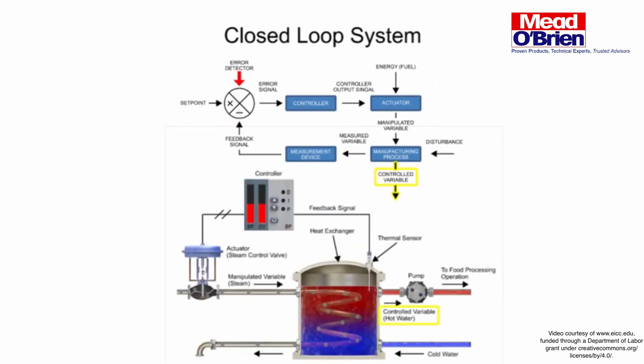The controlled variable is the actual variable maintained in the process. In this example, the controlled variable is the temperature of the water leaving the tank. Measured variable monitors the status of the controlled variable. Water temperature is the measured variable in the process.